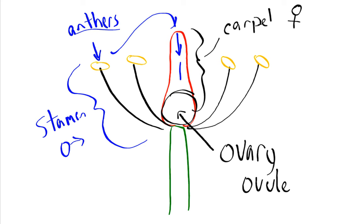Plants can actually fertilize themselves — it's still sexual reproduction, but a plant won't have a lot of variation if it fertilizes itself. That's why insects are so important — they fly from plant to plant in order to fertilize different plants.